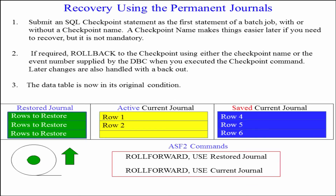Remember that a permanent journal is time oriented, not transaction oriented. Journal tables or databases are restored first. Next, archive journals are restored one at a time, and then the restored journal is rolled forward.